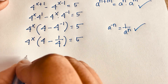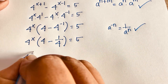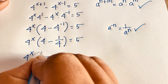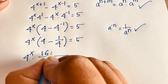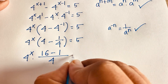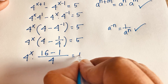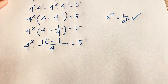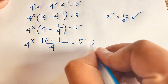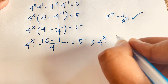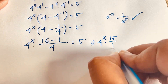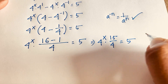Now, the least common denominator is 4. So 4 times 4 equals 16, and 4 divided by 4 equals 1, times 1 equals 1. We find that 4 to the power x times 15 over 4 equals 5.